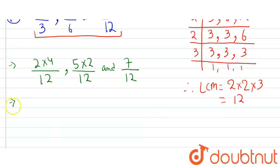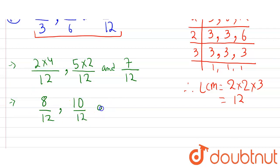Now converting to denominator 12: two upon three becomes four into two equals 8 upon 12; five upon six becomes five into two equals 10 upon 12; and seven upon twelve remains 7 upon 12. So these are the rational numbers having the common denominator 12. This is the answer of the second part.